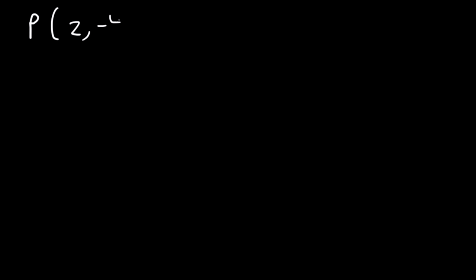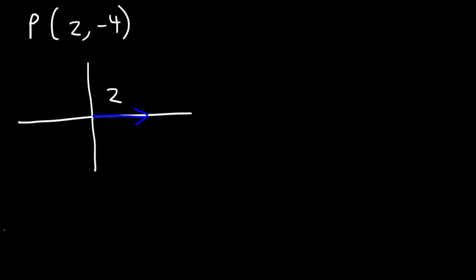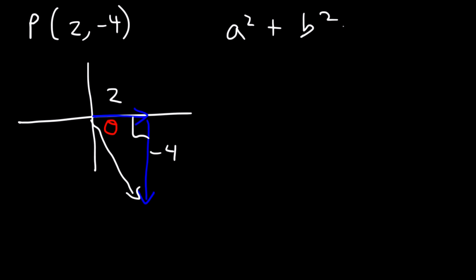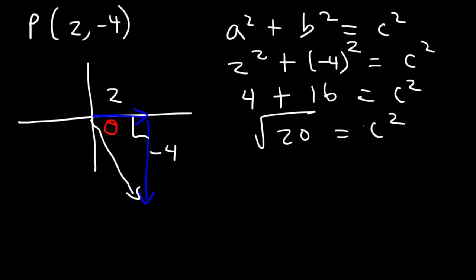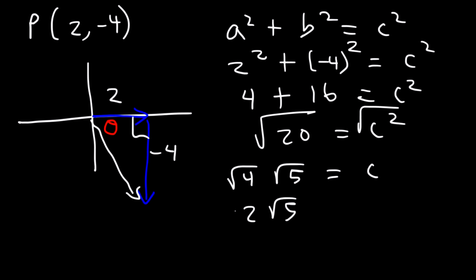Let's try one more problem. We have the point positive 2, negative 4. Pause the video and work on this one. Let's begin by plotting the point — x is positive 2, so go 2 units to the right; y is negative 4, so go down 4 units. This is not a special triangle, so we need the Pythagorean theorem to find r, the hypotenuse. A squared plus B squared equals C squared. A is 2, B is negative 4. 2 squared is 4, negative 4 squared is positive 16, and 4 plus 16 is 20. Taking the square root: the square root of 20 equals the square root of 4 times 5, and the square root of 4 is 2. So the hypotenuse is 2 square root 5.